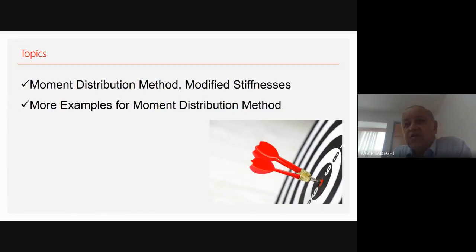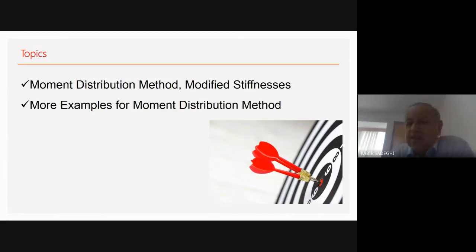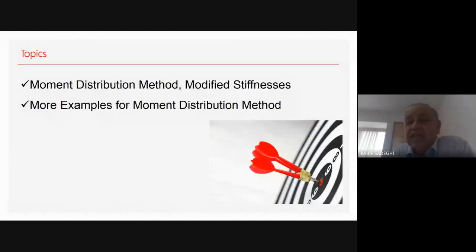Instead of having several cycles, by one cycle or two cycles we have the result. But it's not applicable for every case. I will show you three special cases: when we have a hinge at the external joint, or when we have symmetry, or when we have entire symmetry. For these three cases you will see that you have a very fast solution.